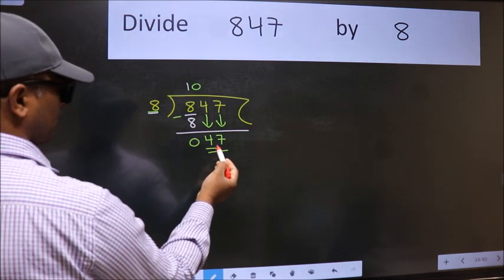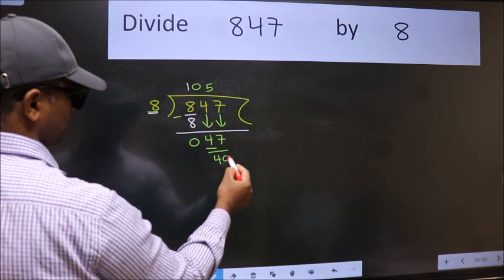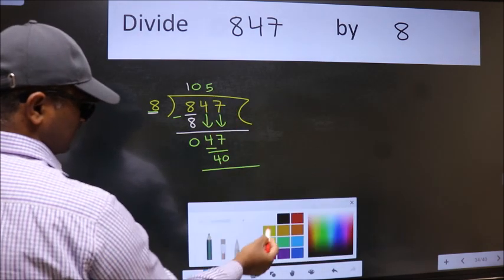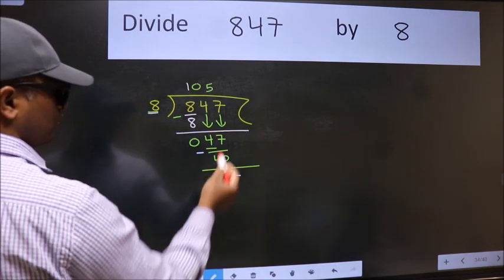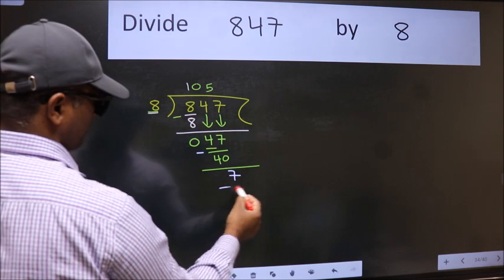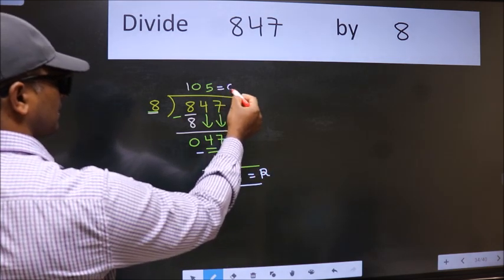A number close to 47 in the 8 table is 8 times 5, 40. Now we subtract. We get 7. No more numbers to bring down, so we stop here. This is our remainder and this is our quotient.